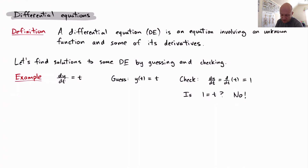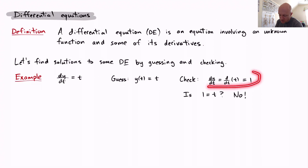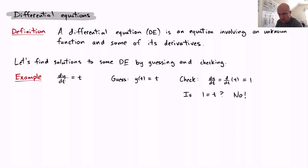First guess: let's guess that y of t equals t. If you already know how to solve this equation, you might think that's a silly guess, but let's check it anyway just to see the mechanics of checking it. To check it, we need to figure out whether dy/dt equals t. Let's compute dy/dt — it equals the derivative of t, which is 1. Is 1 equal to t? No. So y of t equals t is not a solution to this differential equation.